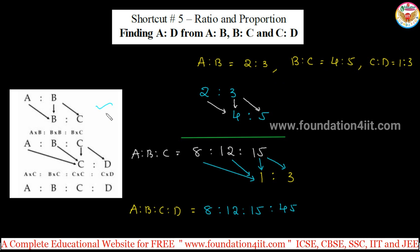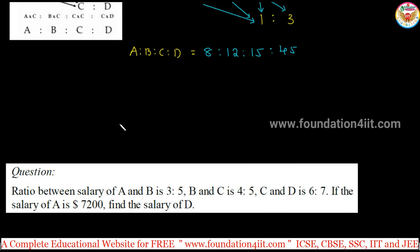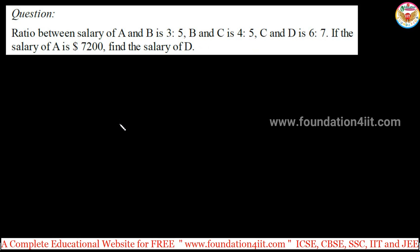So this concept, let me explain with one example. Here is the question: ratio between the salary of A and B is 3:5. So what we should do directly write 3:5 is A:B. Again B and C is 4:5, so under B 4:5. C and D 6:7. This we will take later.